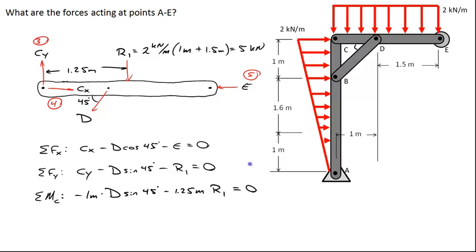So now I have five unknowns and four equations total. We need to keep going and write another free body diagram — let's do a free body diagram of the vertical member ABC.